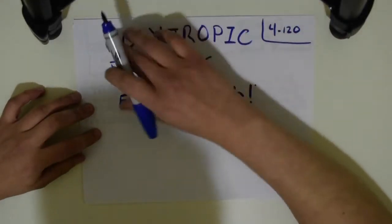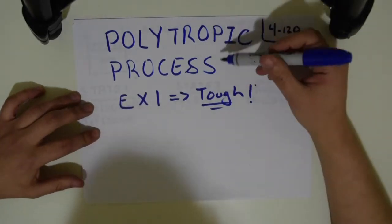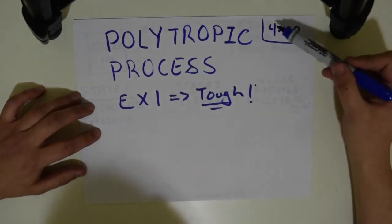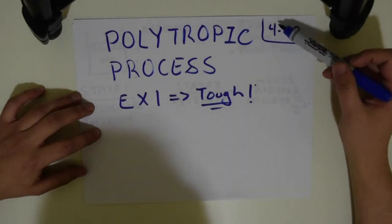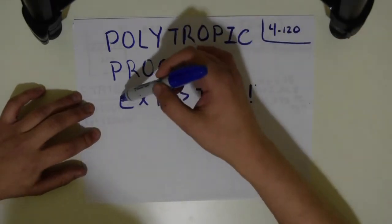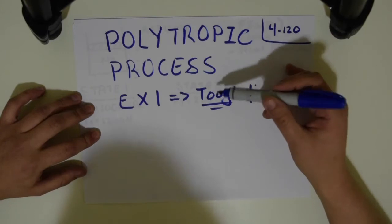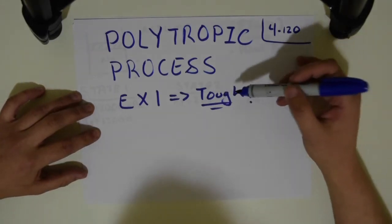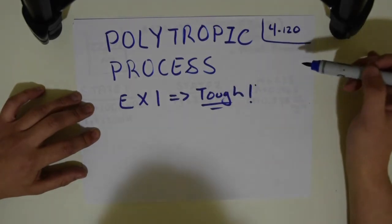Today I'm going to be doing an example on a polytropic process, and it's going to be based off of chapter 4, problem 120. This is going to be probably the first example I do with a polytropic process, and take note that this one is going to be probably the toughest one in the chapter that has to do with a polytropic process.